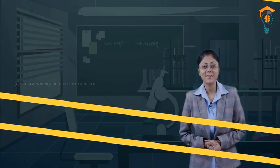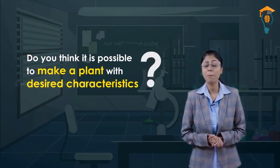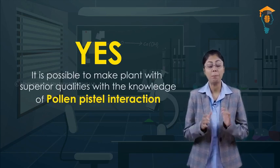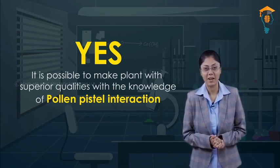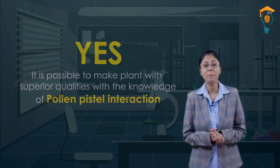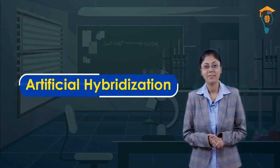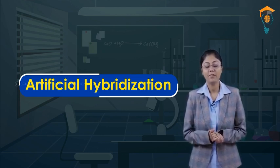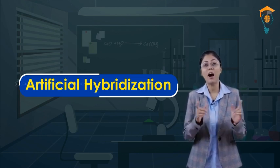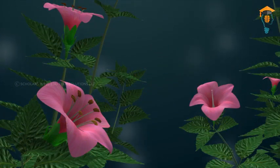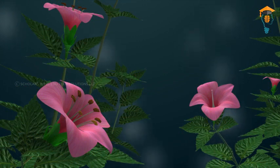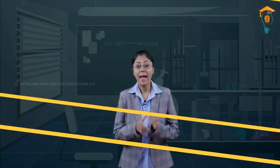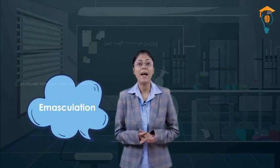It is possible to make a plant with superior qualities using the knowledge of pollen-pistil interaction. This can be achieved by a method known as artificial hybridization, which has a very important role in plant breeding programs. For artificial hybridization, you need to take desired pollen grains and protect the stigma from undesired pollen grains. This is achieved by the process of emasculation and bagging.